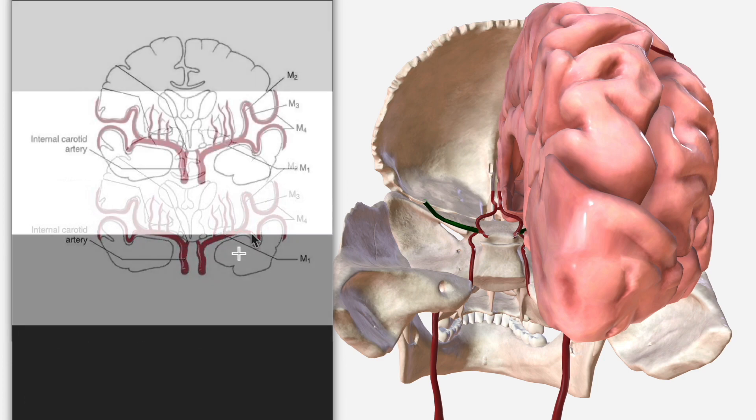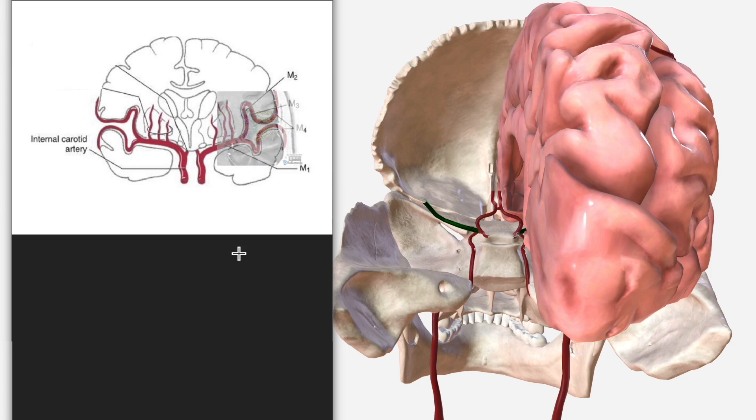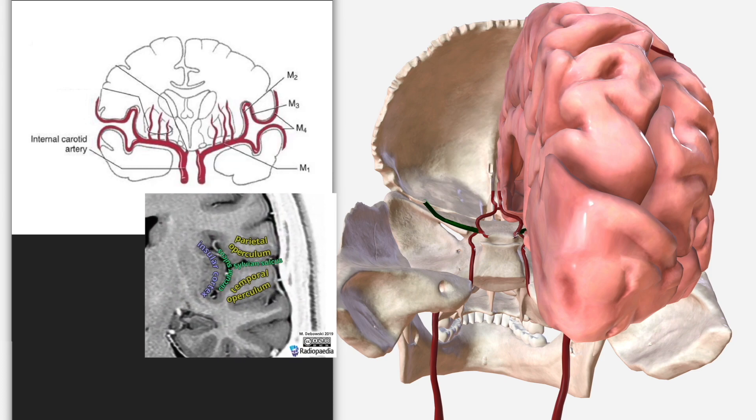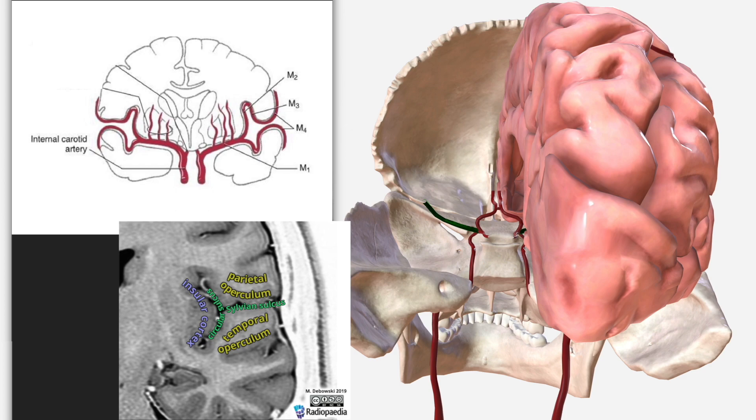I'm going to introduce an image which describes this area a bit more clearly. You can see most medially we have the insular cortex. The sylvian sulcus takes us from the insular cortex to the external surface. Above and below the sylvian sulcus is the parietal and temporal operculum. These are the sections of the brain abutting the sylvian sulcus.